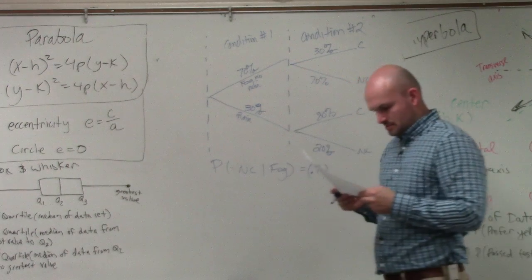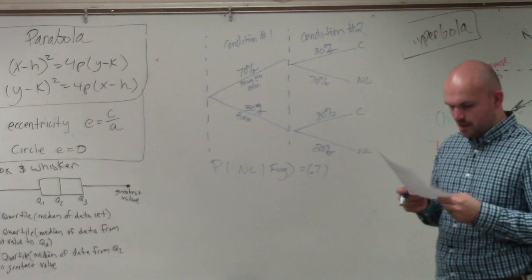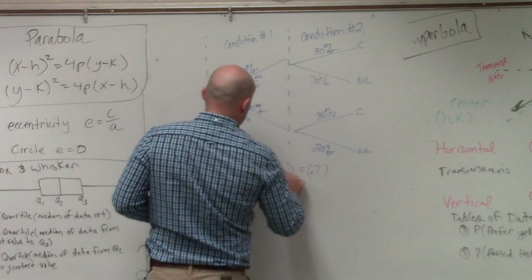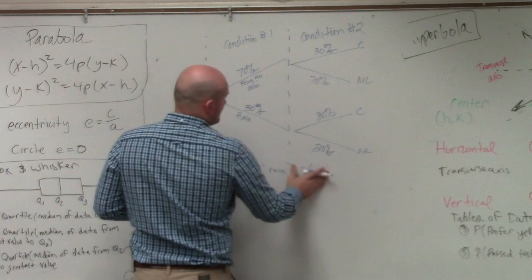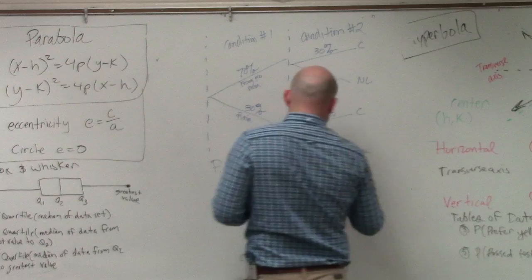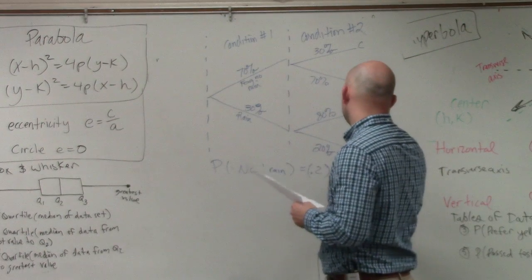Wait, sorry. Oh, find the probability that it will be not canceled if there's rain. So not canceled would be 0.2 times rain, which is 0.3.